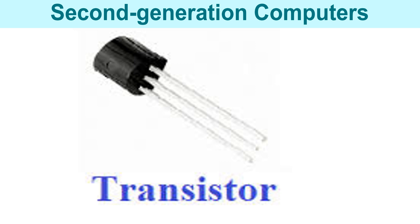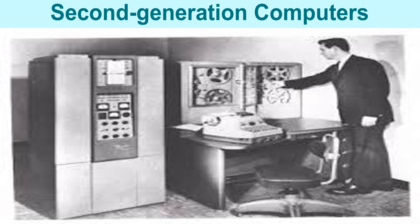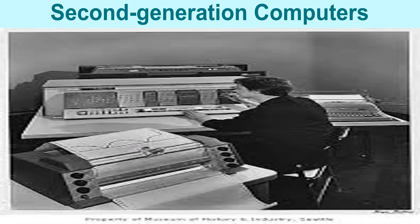Now let's discuss about the second generation computers. The main characteristics were as follows: they used transistors as their main component. Computers of this generation were smaller, faster, and more efficient than the first generation computers. They also contained all the components we associate with modern day computers — that is, printer, memory, disk storage, operating system, etc. They were also less expensive than the first generation computers.